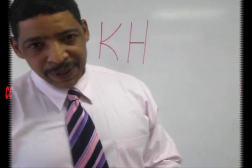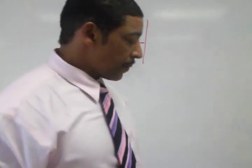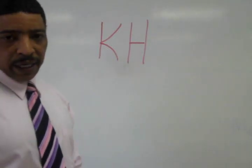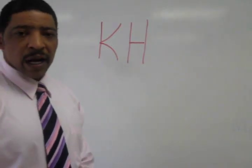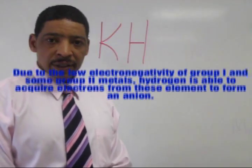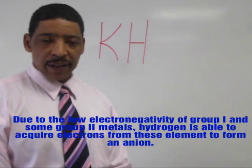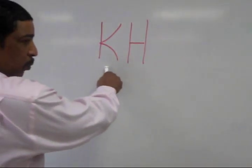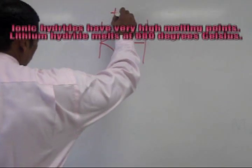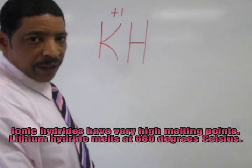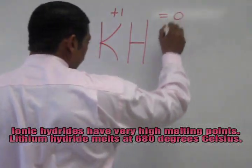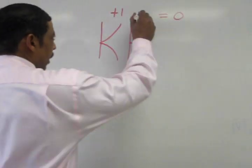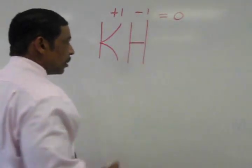Now let's look at a compound that has a negative hydrogen ion. This compound is known as potassium hydride. Hydrides are compounds that contain hydrogens with negative oxidation states. In this case, potassium, one of the group 1 metals, will have a plus 1 charge. The net charge will be 0. So in this particular situation, hydrogen will have a minus 1 charge.